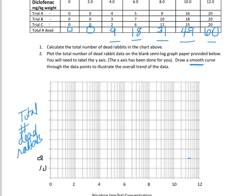Now I'm going to plot my data. One thing to notice is that this is not a percentage — it is the total number of dead rabbits. So at zero we have zero; at two milligrams we have two; at four we have nine, so just below the ten line; at six we have eighteen; at eight we have thirty-one; then forty-nine; and then sixty.